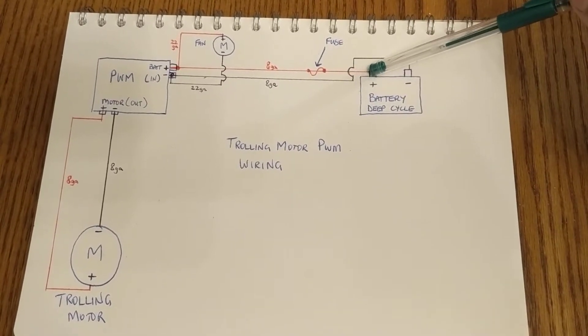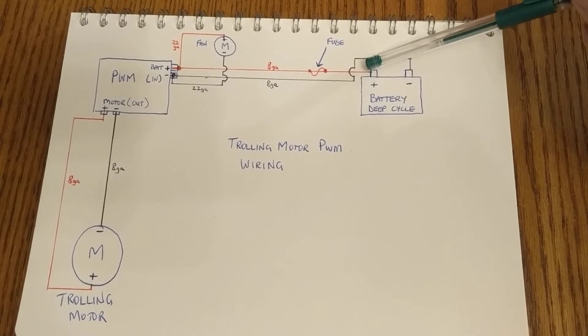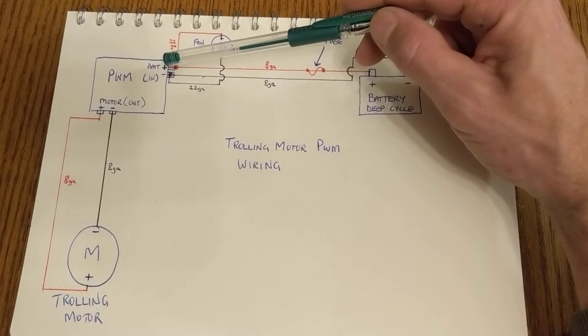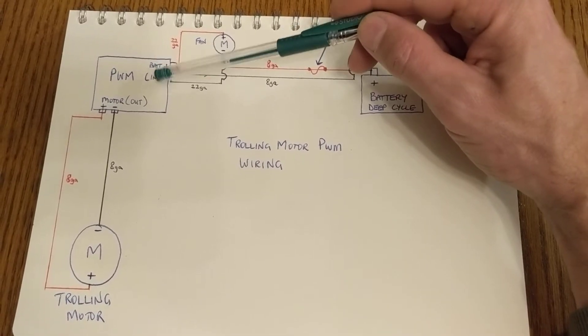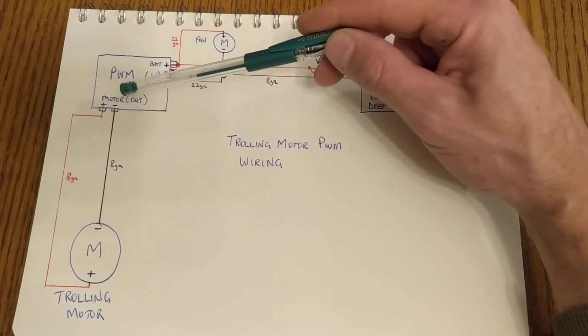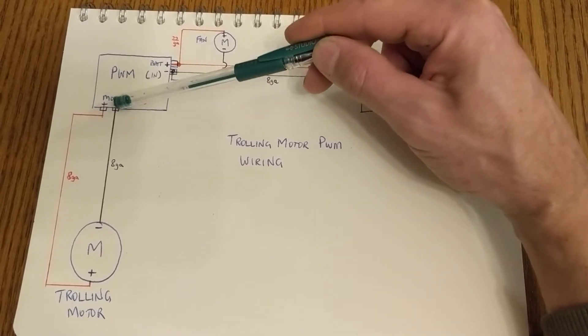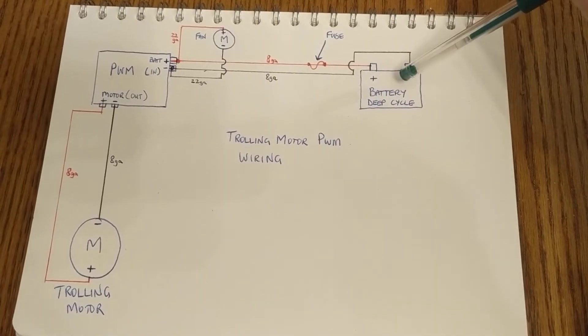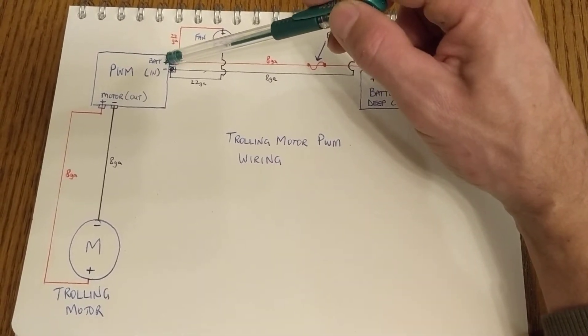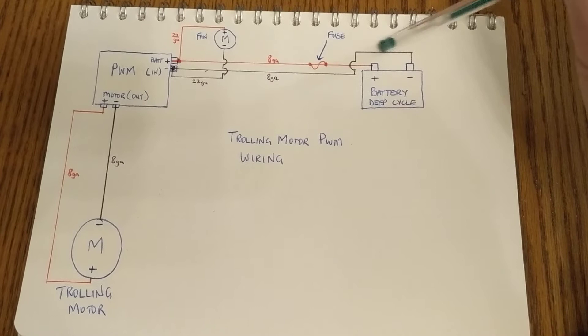I'm running eight gauge wire both positive and negative from the battery over to my PWM over here. Now the PWM has a battery or an inside positive and negative, and it has a motor or an outside positive and negative. So from the battery positive to the battery positive on the PWM or the inside, and same with the negative.